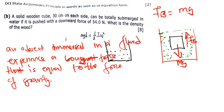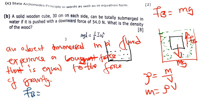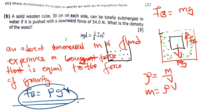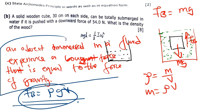In equation form: since we don't know the mass directly, we use density — rho equals mass divided by volume. If we cross-multiply, mass equals density times volume. So we can replace mass, and the buoyant force FB will be equal to density (rho) times g times volume V. That is the equation form of Archimedes' Principle.